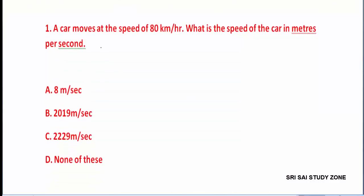Example: a car moves at the speed of 80 km per hour. What is the speed of the car in meters per second? The car moves at 80 km per hour. So we take 80 km, which is 80 into 1000 meters, and 1 hour equals 3600 seconds.